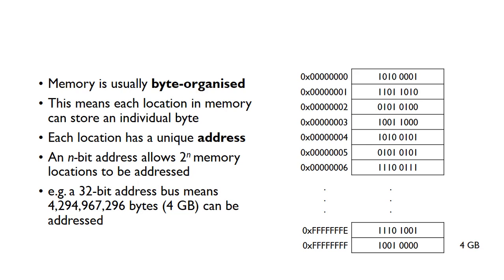Memory is usually byte organized, so this means that each location in memory can store an individual byte. Each memory location has a unique address, and we use different binary values to represent these addresses. An n-bit address allows 2 to the n memory locations to be addressed.